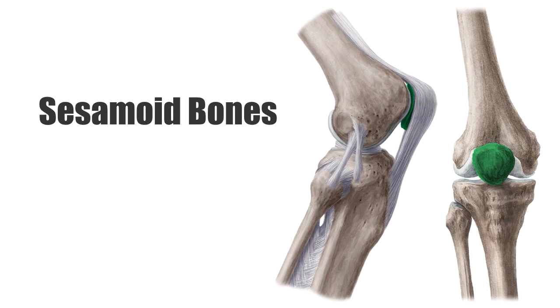Sesamoid bones are found at the end of long bones in the limbs, where the tendons cross. For example, the patella bone in the knee.